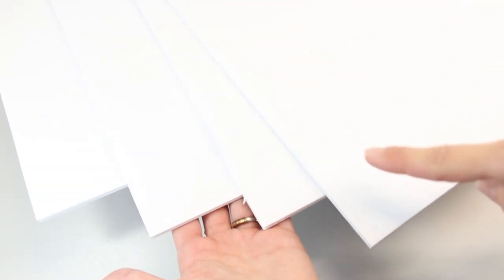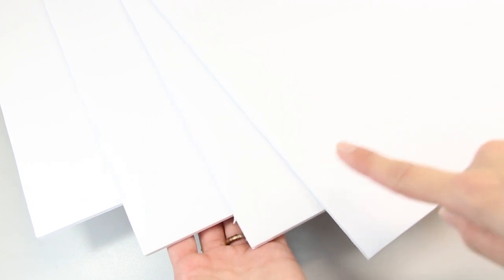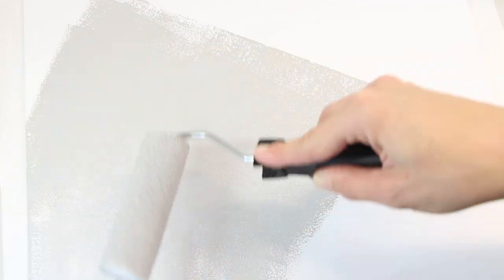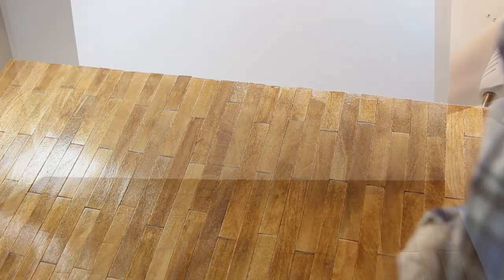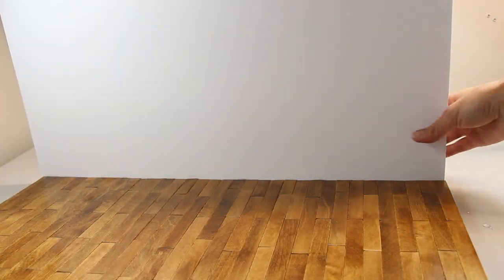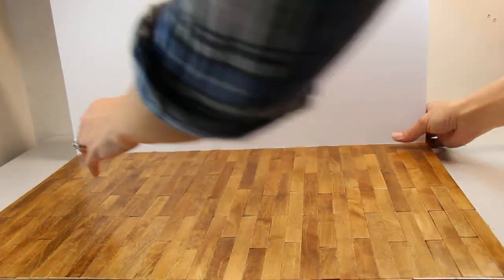Cut four fifteen-by-fifteen-and-a-half-inch pieces of foam board for the sides. Glue each side together. I decided to paint my walls gray. I used a foam roller and aged gray chalk paint. Cut a 23-by-fifteen-and-a-half-inch piece for the back wall. Glue it to the floor.